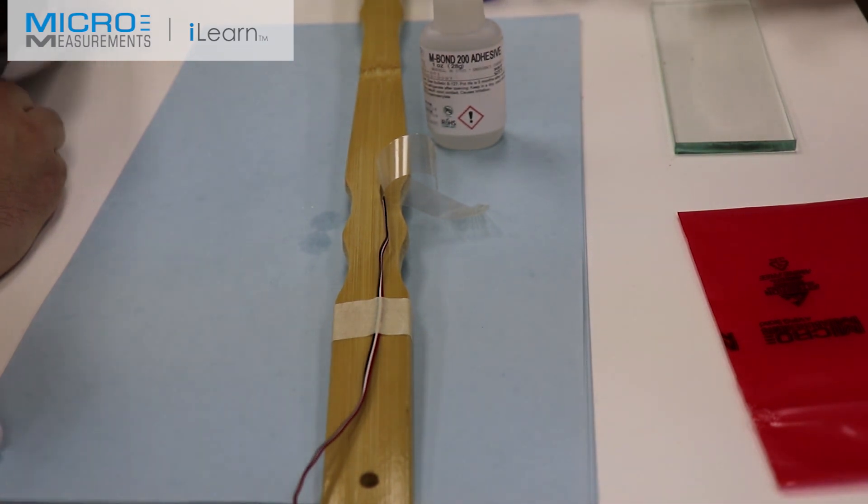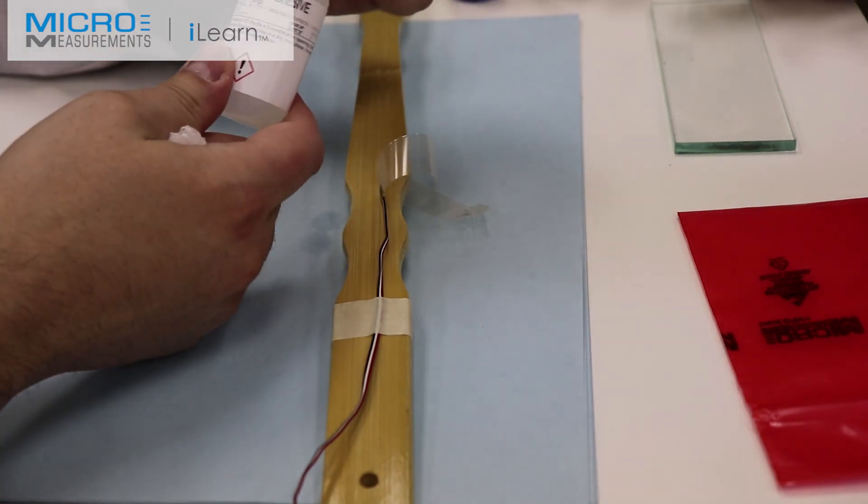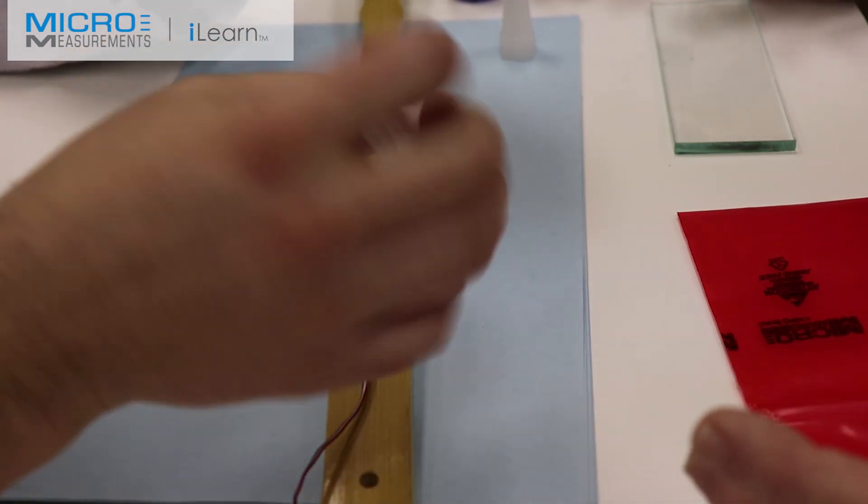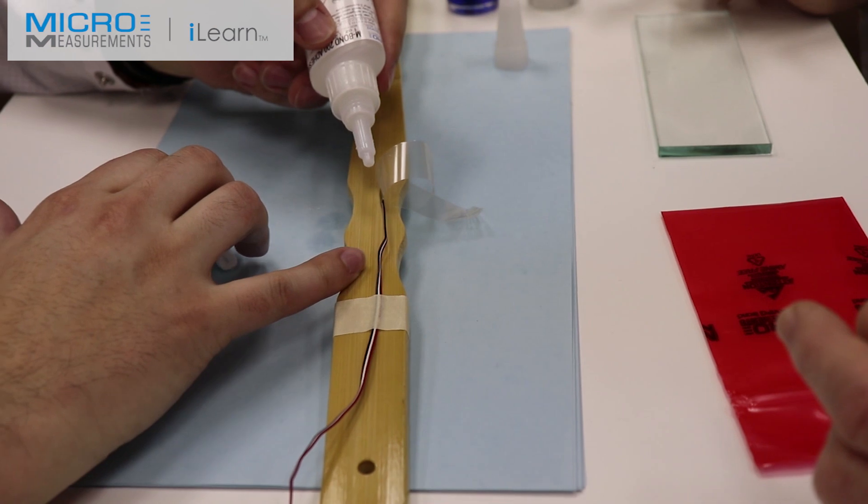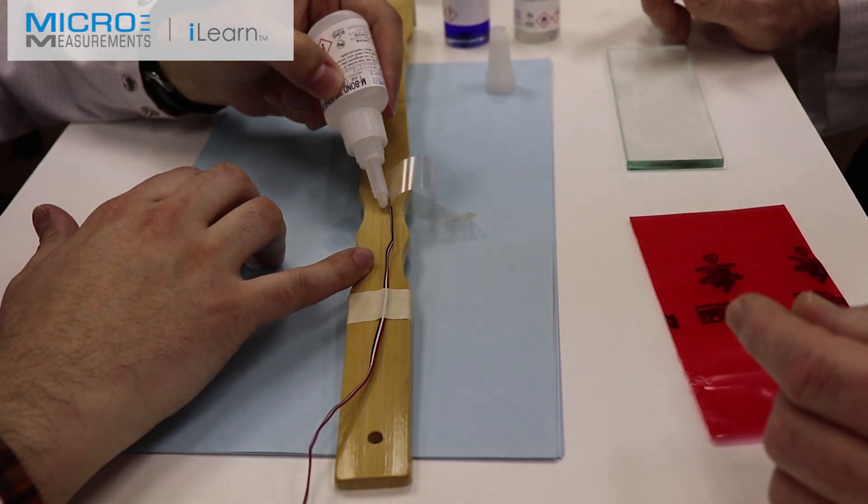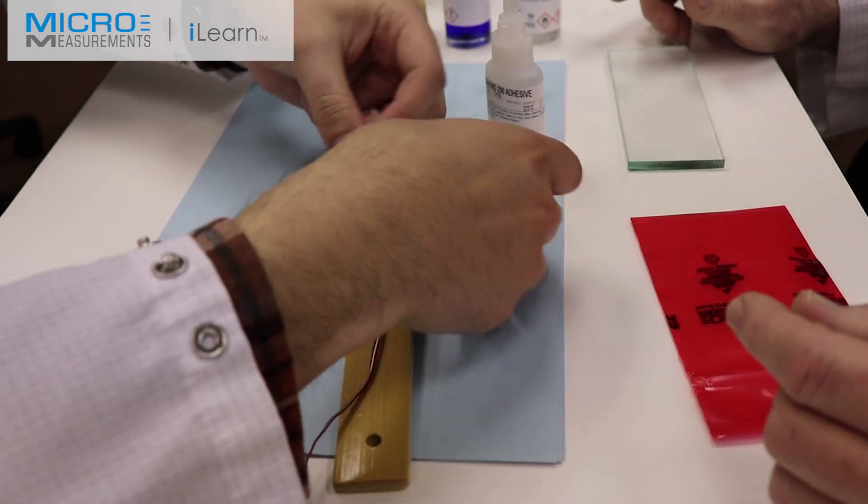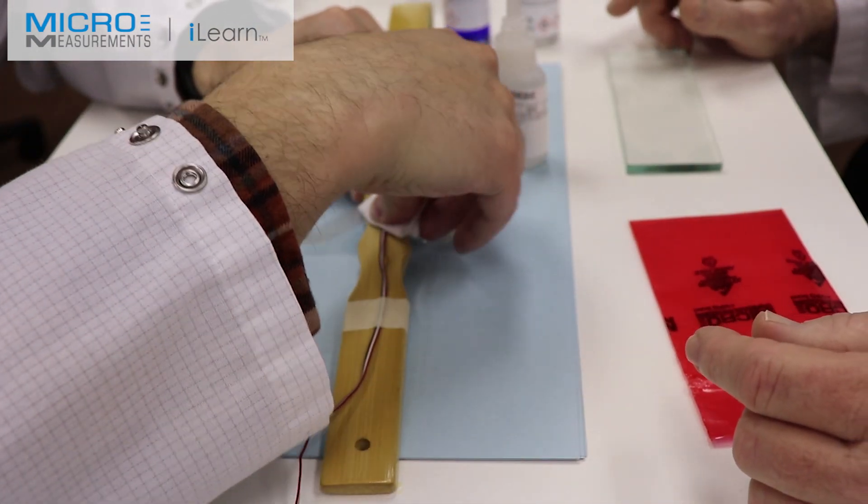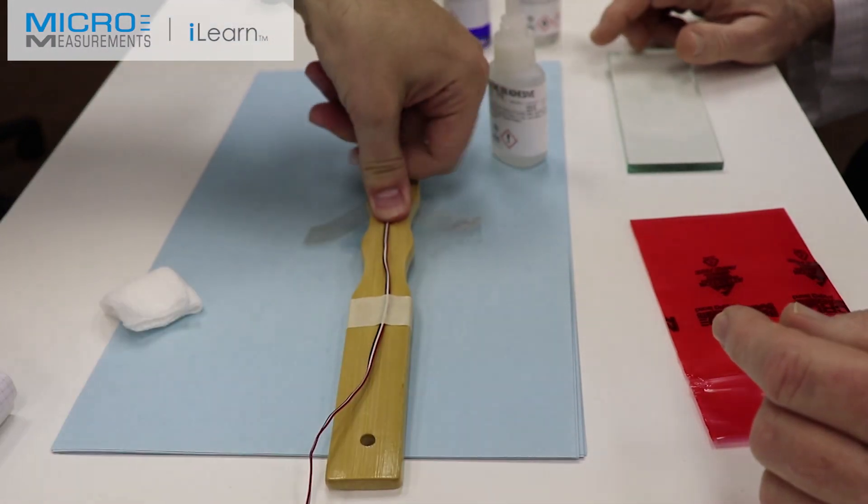We need to apply the M-Bond 200. Colin's going to open up the bottle. He's going to have a gauze sponge folded in quarters and ready for spreading the adhesive. He'll put a single drop of adhesive at the cusp of the tape and the scratcher. Then he'll take the gauze sponge, squeegee it across, and then follow with his thumb.